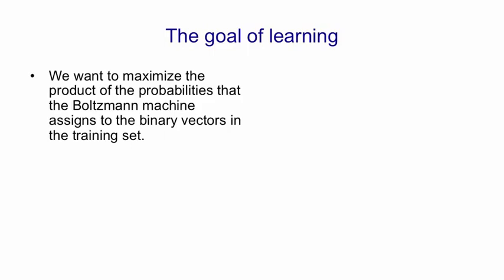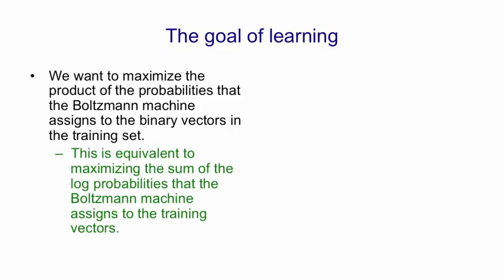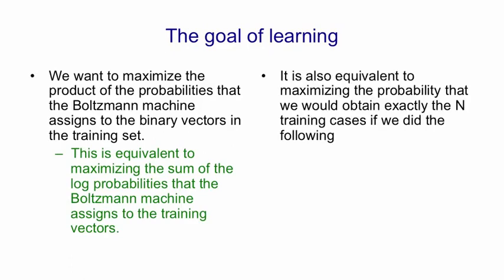What we want to do is maximize the product of the probabilities that the Boltzmann machine assigns to a set of binary vectors, the ones in the training set. This is equivalent to maximizing the sum of the log probabilities that the Boltzmann machine assigns to the training vectors. It's also equivalent to maximizing the probability that we'd obtain exactly the n training cases if we ran the Boltzmann machine in the following way.